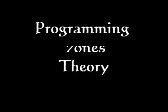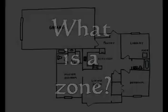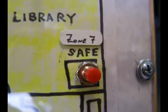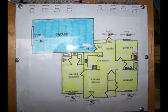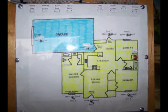Our goal for today: I'd like to tell you the technical theory behind programming zones. What's a zone? A zone is simply something you want to protect. It can be as small as the safe in your library, or as large as your entire house. But putting every sensor in a house on one zone is a very unwise thing to do. If your alarm were to activate, you would know there's a problem but have no clue where the problem was. The solution?